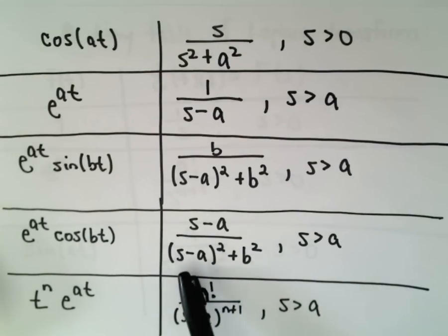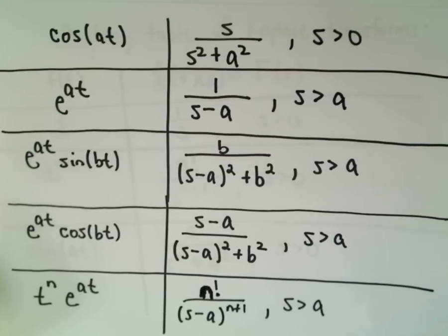If it's e to the a t cosine of b t, we get s minus a over s minus a squared plus b squared. And if we have t to a power of n times e to the a t, we get n factorial over the quantity s minus a raised to the n plus 1. So we'll use these in some other examples to actually calculate Laplace transforms of functions.